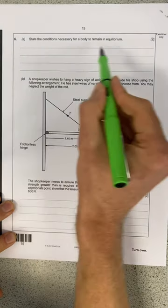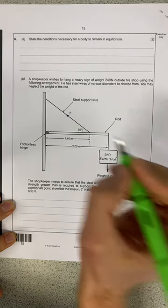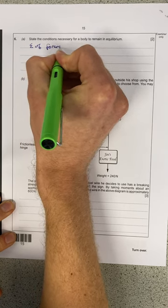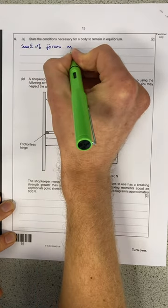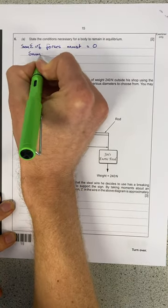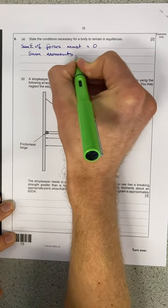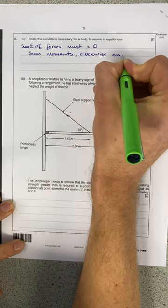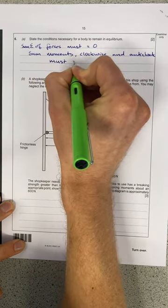Okay, so the first thing he wants me to do is state the conditions necessary for a body to remain in equilibrium. There's two parts to this: the sum of forces must equal zero, and at the same time the sum of the moments, clockwise and anticlockwise, must also equal zero.